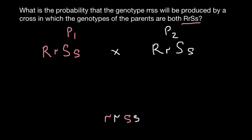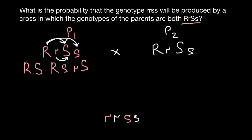So, what is the probability? It is very easy to find. We just have to list all the possible gametes that each genotype can produce. The first variant is going to be capital R and capital S. The second variant is going to be capital R and small s. The third variant is small r and capital S. And the fourth variant is small r and small s. So, four variants.